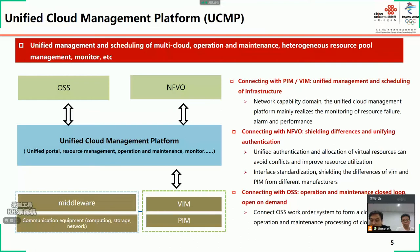The UCMP connects with PIM and VNFM, managing and scheduling infrastructure in a unified manner. It mainly realizes the monitoring of resource filters, alarms, and performance. The business orchestration is still handed over to NFVO. We need to complete the connections with NFVO and OSS. We should keep the consistency of authentication with NFVO for the allocation of virtual resources, to avoid conflicts about resource reuse and to improve resource utilization. We will connect it to OSS in order to form a closed loop of cloud infrastructure operation and maintenance processing.